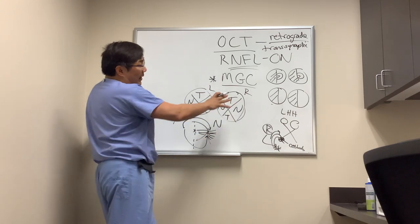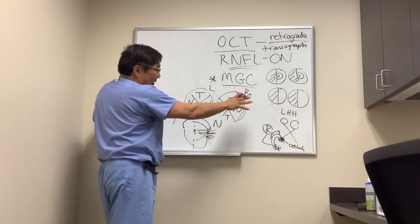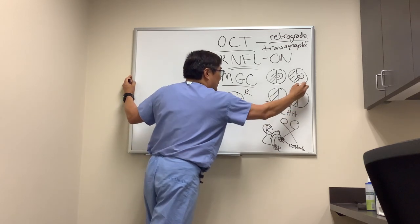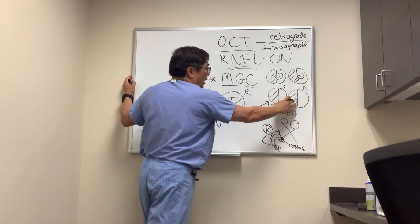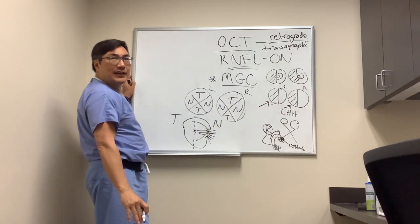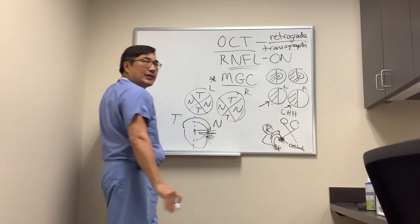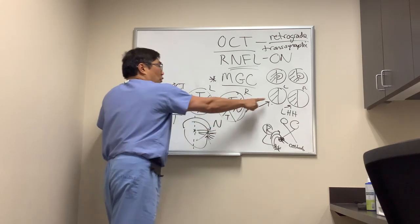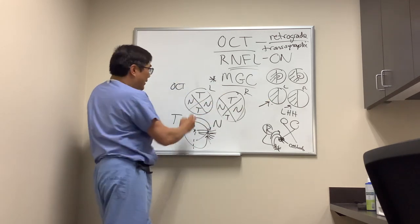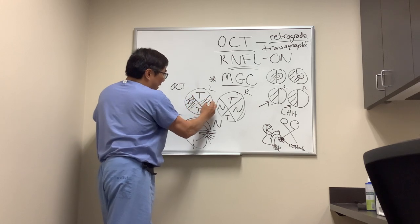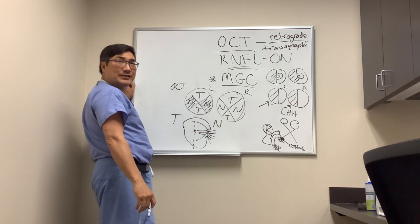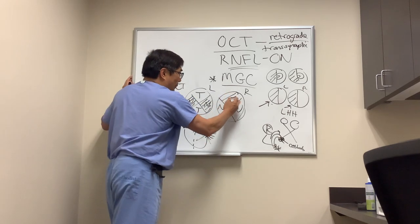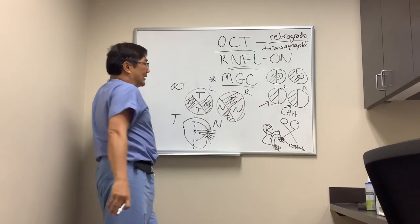With a left homonymous hemianopsia, the right eye has a nasal field defect and the left eye has a temporal field defect. The left eye on OCT, corresponding to the temporal field defect, will have nasal atrophy — this is called band atrophy. The eye with the nasal field defect will have temporal fiber loss, in this case the right eye.